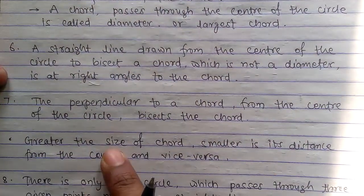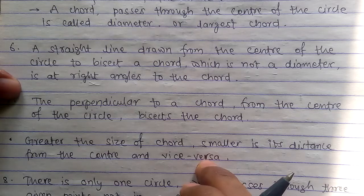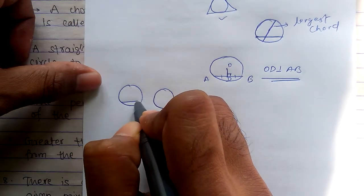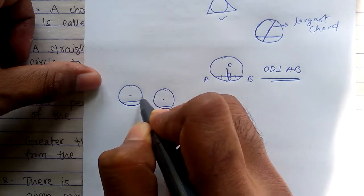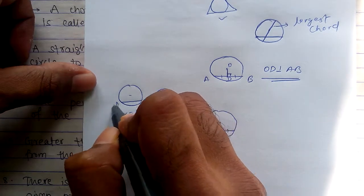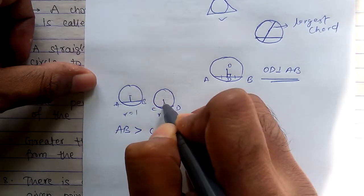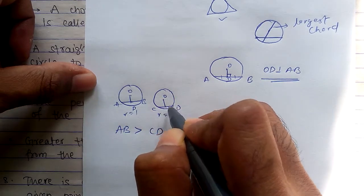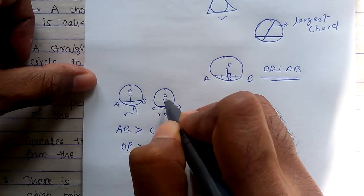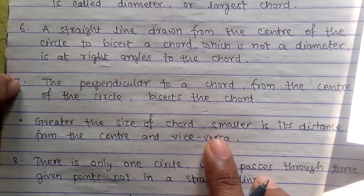Greater the size of chord, smaller is its distance from the center, and vice versa. For example, if you have a circle and if the chord is far from center, the distance is more but the chord length is smaller. And vice-versa - if distance is less, the chord length will be more.